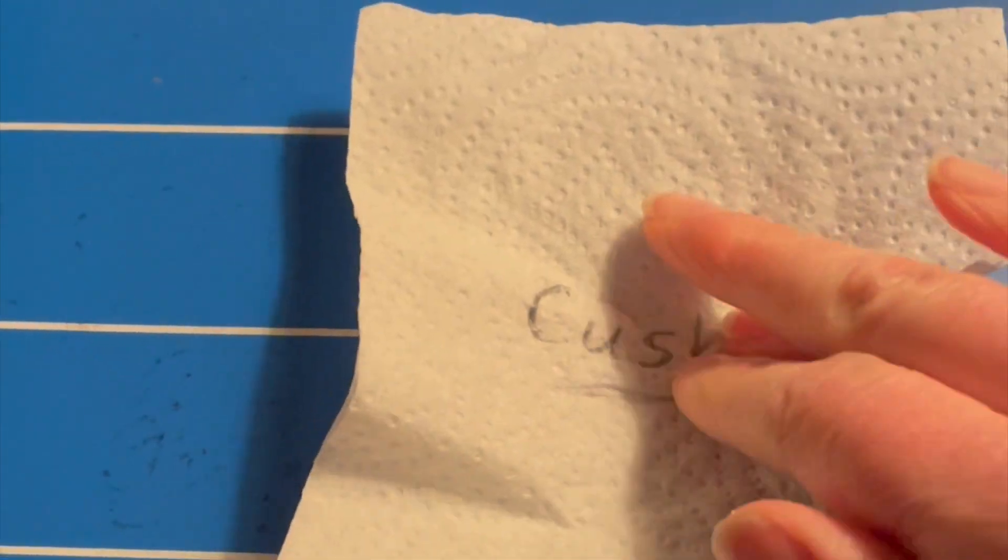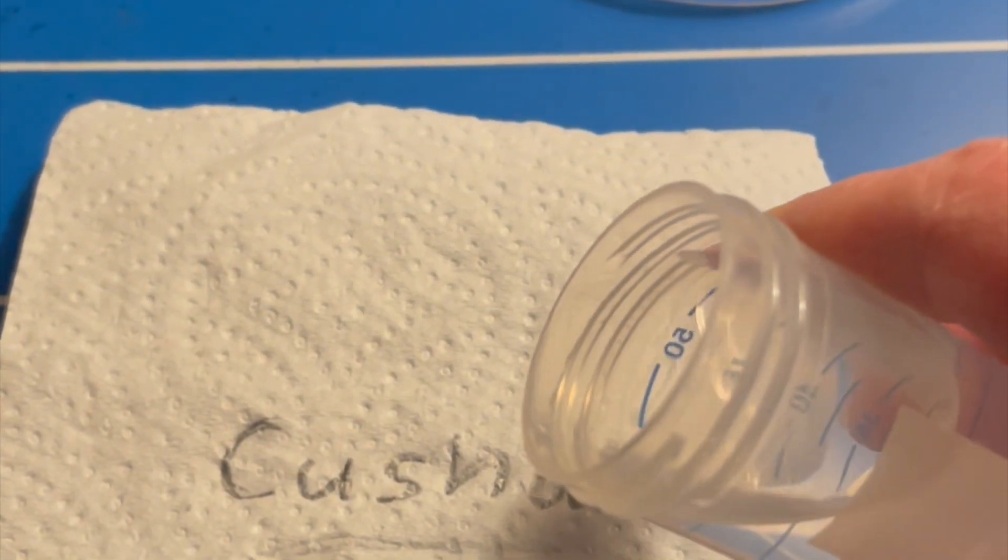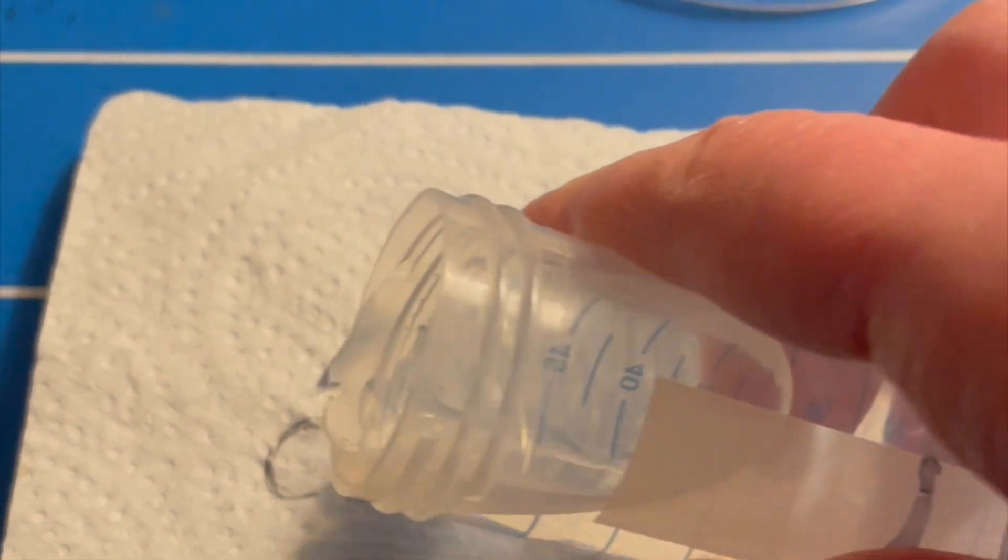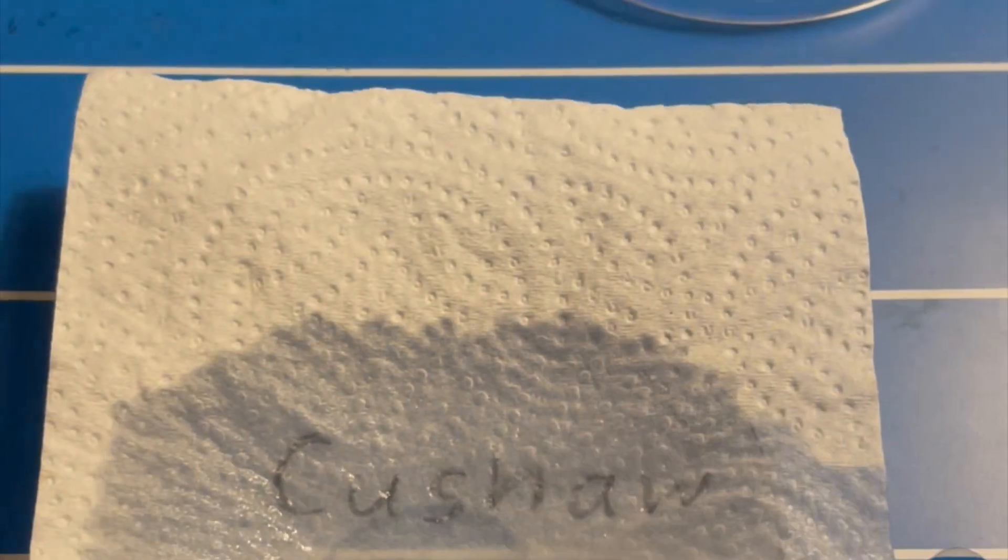Next, take your labeled paper towel and place it in a petri dish or other small plastic container with a lid. Then add some water to your kitchen roll. Make sure that the kitchen roll is completely soaked.